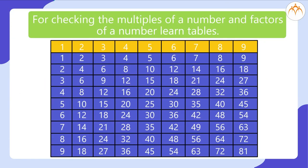For checking the multiples of a number and factors of a number, learn tables. The first number in the column is a factor of all the numbers below. For example, 3 is a factor of 6, 9, 27, 18, etc. All these are multiples of 3. Similarly, we see multiples of 2, 4, 5, 6, 7, 8, 9 in the respective columns.